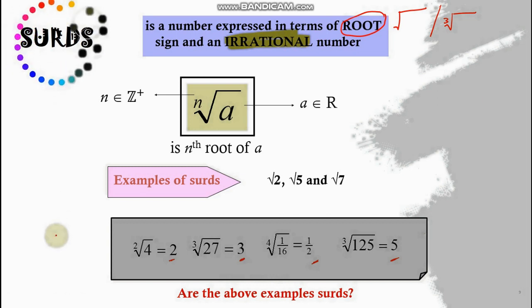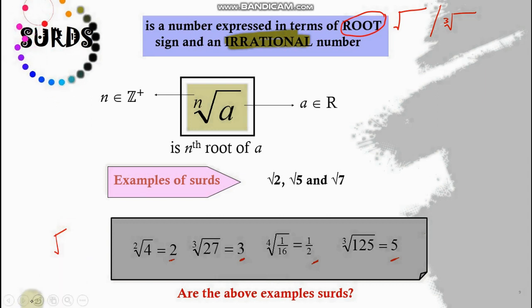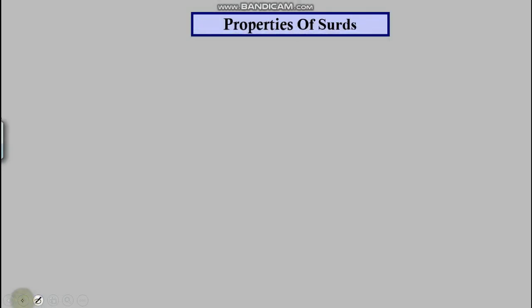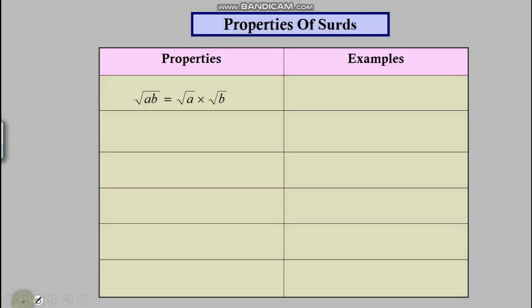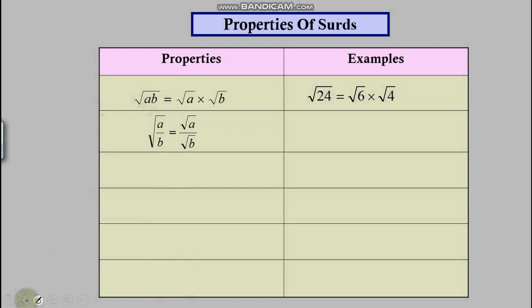From now on, we usually call any number with the root sign a surd, just to make things clear. Now, the properties of surds — there are three main important ones. Whenever you have the surd of a times b, you can separate them out. The same goes if you have a fraction: the top and the bottom can be separated.